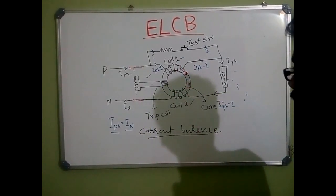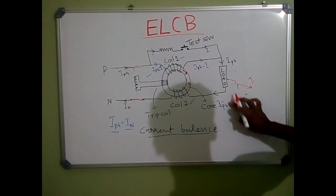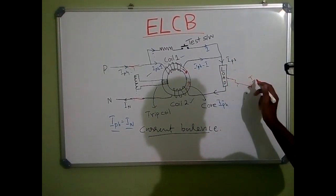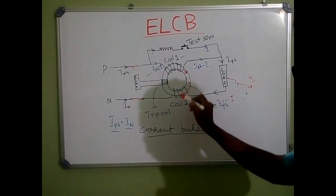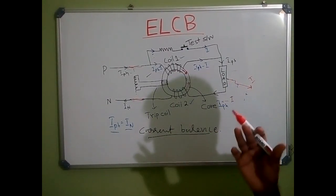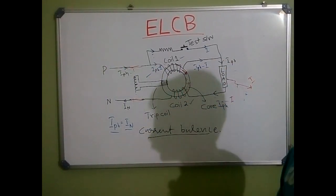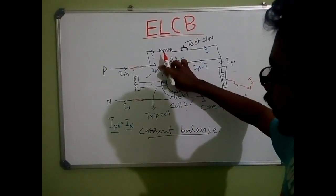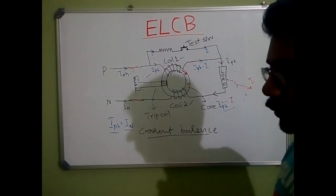Now we are going to look at what happens when a leakage current occurs. Let us say a leakage current of I occurs here due to insulation failure. I-phase is the entering current to the load. So the net current coming into Coil 2 is nothing but I-phase minus I. This current passes through Coil 2 and reaches neutral. Current through Coil 1 is I-phase, and current through Coil 2 is I-phase minus I, so the currents in Coil 1 and Coil 2 are not the same.